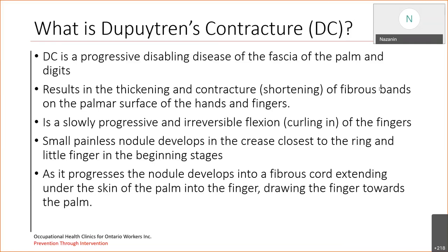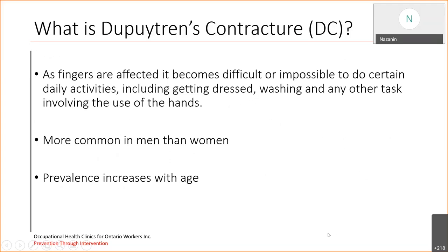in the crease closest to the ring and little fingers in the beginning stages. And as it progresses, the nodule develops into a fibrous cord extending under the skin of the palm into the fingers, which will eventually draw the fingers towards the palm.